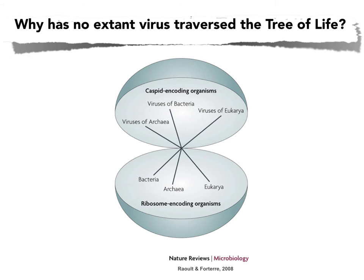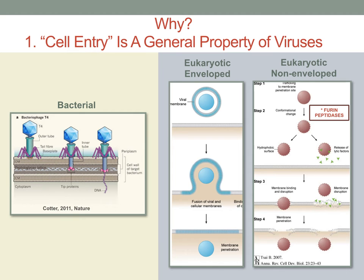We know that viruses are often very specific to their hosts, even within a bacterial genus, perhaps even species. The specificity issues really come down to cell entry. Cell entry is a general property of viruses. Bacteriophages are going to use some kind of injection method — attachment to the cell, inject your DNA to get in. Eukaryotic viruses will tend to use fusion processes where the envelope around the virus fuses to the eukaryotic membrane, often mediated by various eukaryotic peptidases or proteins to get the virus in.